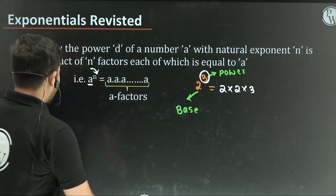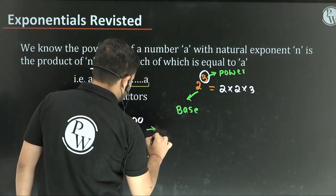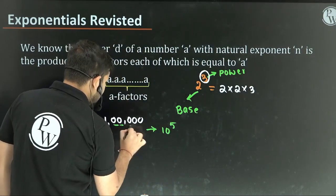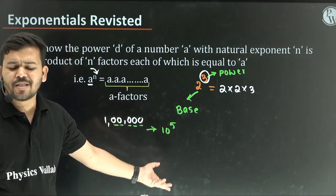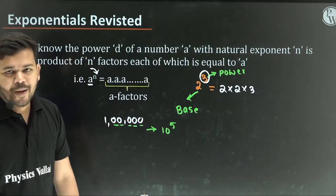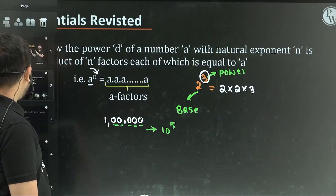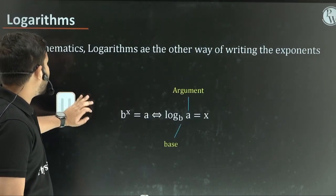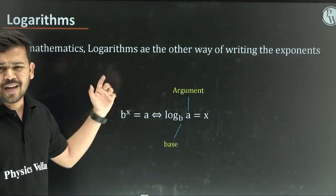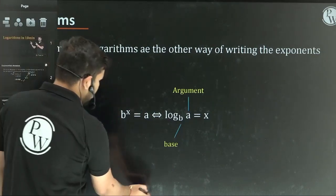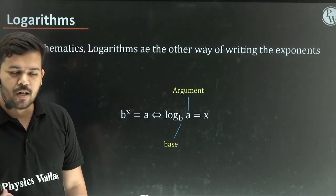Now let's move to logarithms. Basically, when we have big numbers — like 10 to the power of mega, giga, tera — there are many numbers to represent, and the easiest way is using exponents. For example, one lakh can be written as 10 to the power of 5. So the exponent format is the shortest representation. Logarithm is just another way of expressing that exponent.